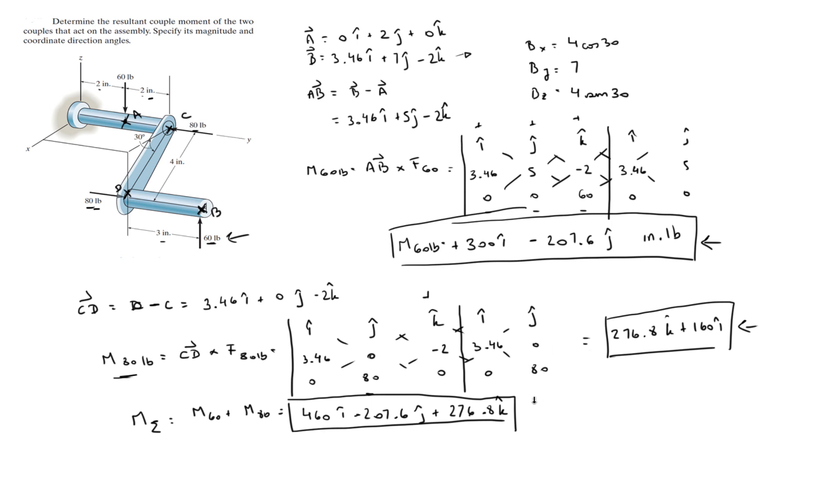Now all you need to do is find the magnitude. The magnitude is found by doing the square root of the X component plus the Y component plus the Z component all squared. So you get this one squared plus this one squared plus this one squared, and then you do the square root of all of that, and you should get that the resultant moment is 575.6 inch pounds of course.